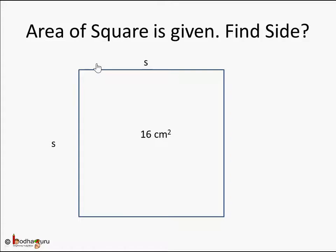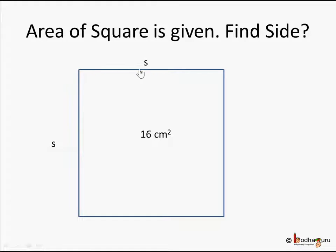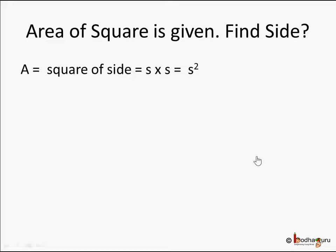Here we are going to learn the square root of a number. So given a square, and we are given its area — say 16 centimeters square — our goal is to find the length of each side of this square. We know the area of a square is nothing but the square of its side, that is side into side, or s squared. This is what we learned in our last video.